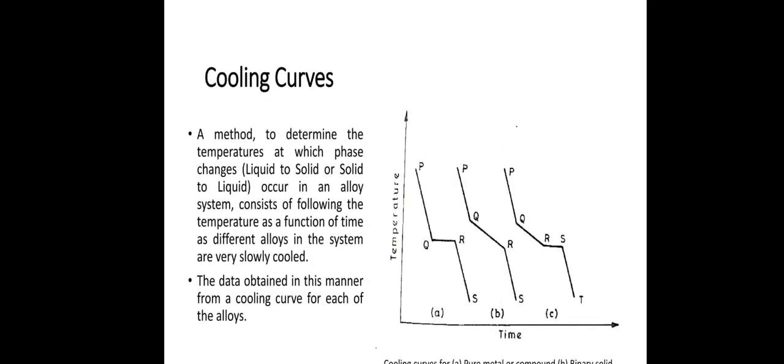Here we can see one cooling curve as an example differentiating between time versus temperature. A method to determine the temperature at which phase changes liquid to solid or solid to liquid occur in an alloy system consisting of plotting temperature as a function of time as different alloys in the system are very slowly cooled. The data obtained in this manner forms a cooling curve for each of the alloys.